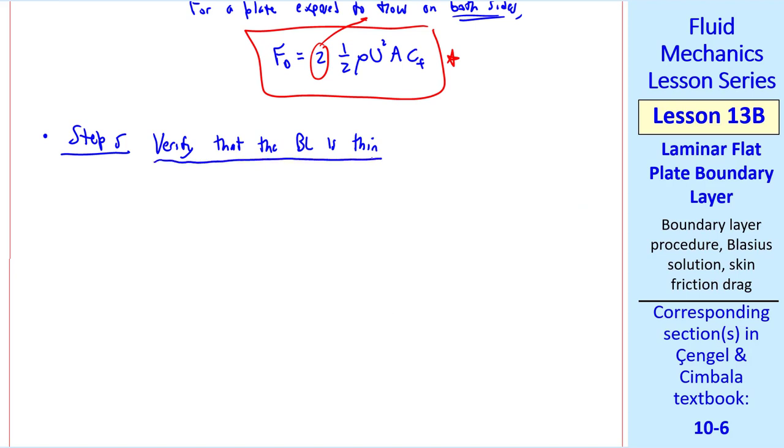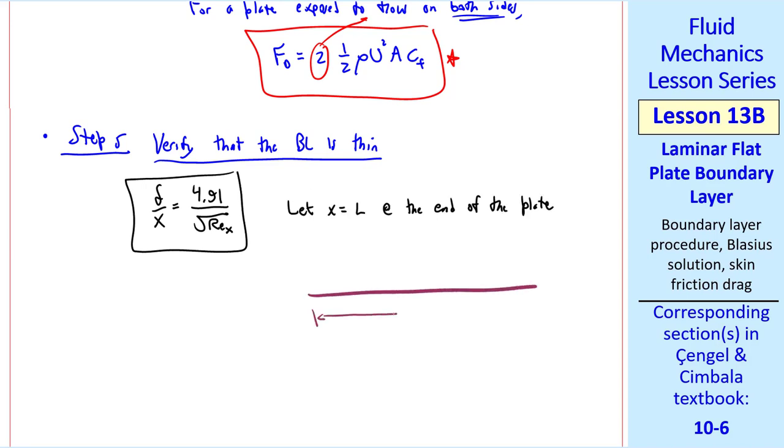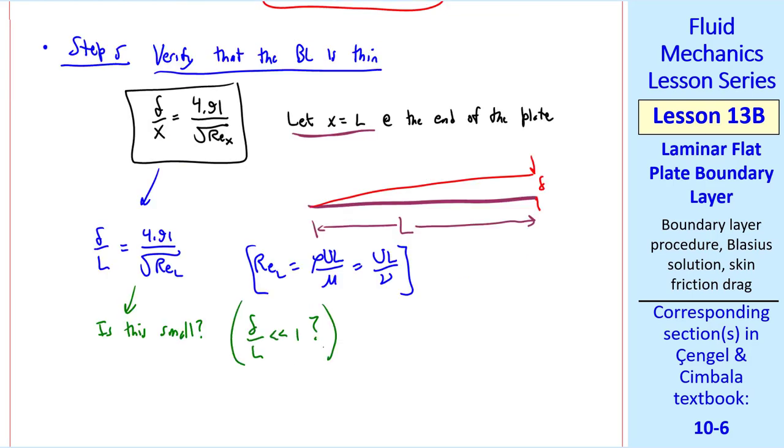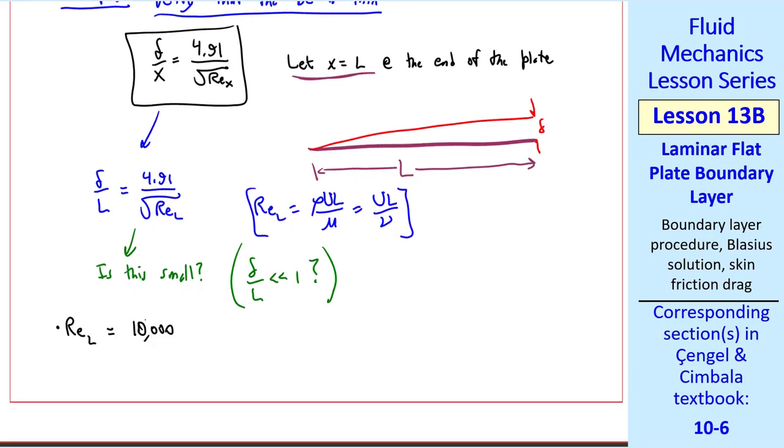Finally, step five is to verify that the boundary layer is thin. We had this expression for delta over x. And if we're doing a practical problem where the plate is not infinite, but is of length L, then we let x equal L at the end of the plate. And we'll define delta at the end of the plate at x equal L. So delta over L is 4.91 over the square root of REL, where we define REL the same way we defined REX, but set x equal to capital L. Is this small? In other words, is delta over L very small compared to 1? Well, it will depend on Reynolds number. Remember that boundary layers work best for big Reynolds numbers.